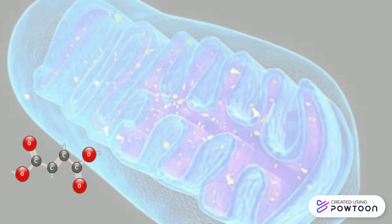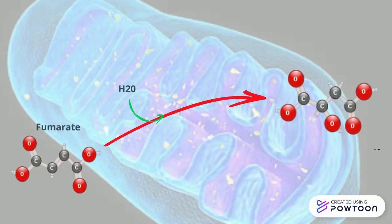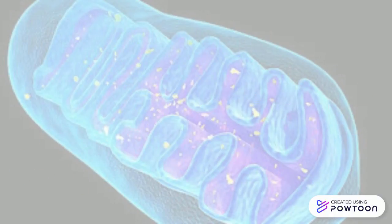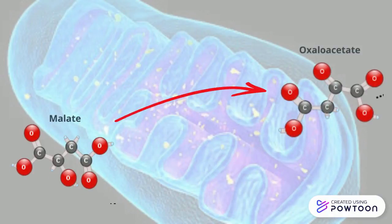Next, fumarate will combine with a molecule of water to form malate. Finally, malate will become oxaloacetate, and a molecule of NADH will be formed. The process will then be repeated.